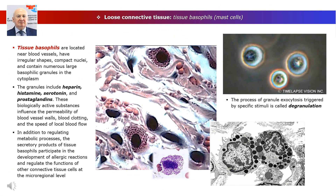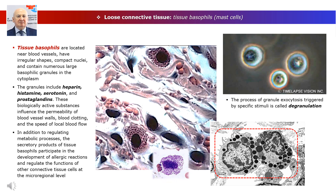The key cellular elements ensuring the trophic function of connective tissues are tissue basophils, or mast cells. They develop from hematopoietic stem cells and make up to 10% of cells in loose connective tissue. Tissue basophils are located near blood vessels, have irregular shapes, compact nuclei, and contain numerous large basophilic granules in the cytoplasm. The granules include heparin, histamine, serotonin, and prostaglandins.